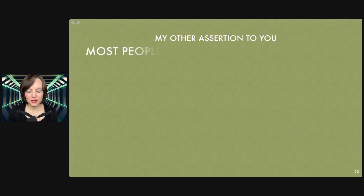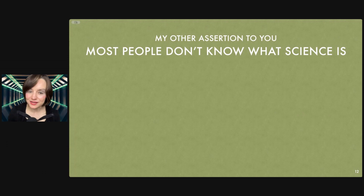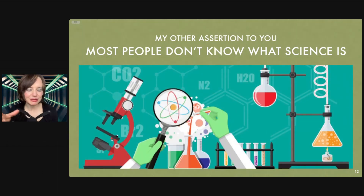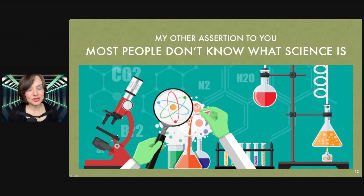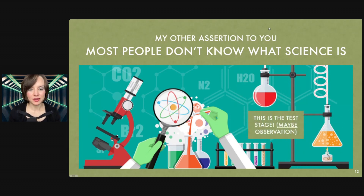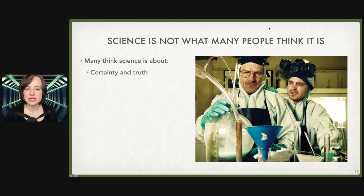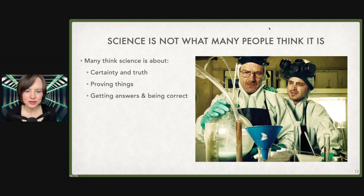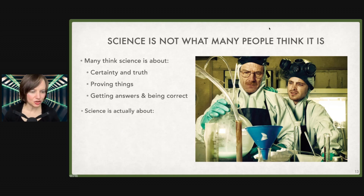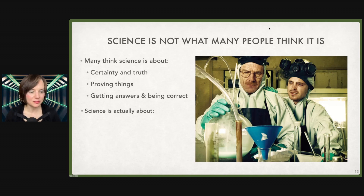I have a second assertion for you in this video: most people don't actually know what science is. When we think of science, or hypothetically do a Google image search for science, we tend to get things like lab equipment, microscopes, tools, instruments, and so on. But that's unfortunately just a tiny part of science, and we tend to overemphasize this part. When we think of scientists working in a lab, many people picture things like certainty, truth, and correctness. We think of proving things — scientists have proven this, we've proven that — it's all about getting answers and being correct. Scientists are seen as know-it-alls who know everything and can tell you irrefutable facts that we should all trust. A nice idea, but overly simplistic, and frankly misleading to the point where it's actually causing us more problems than helping us.